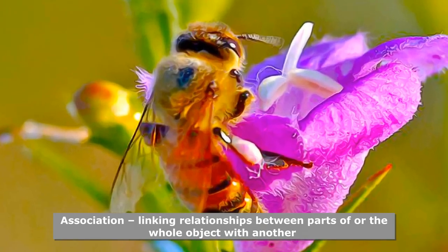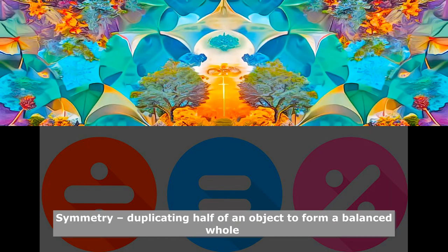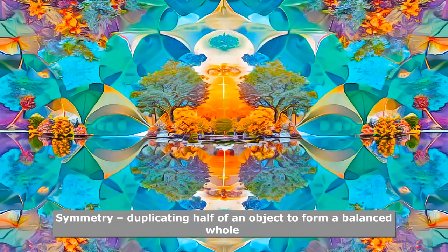Association is linking relationships between parts of or the whole object with another. Symmetry is duplicating half of an object to form a balanced whole.